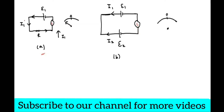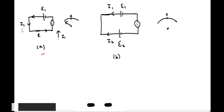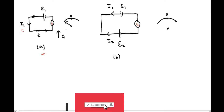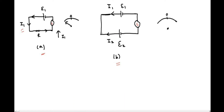Welcome to RubX. In figure A, I have a cell whose EMF is E1, which is sending current I1 in the circuit through resistance R. When this current I1 passes through the galvanometer, the galvanometer will show deflection in the leftward direction when the current is in the upward direction.